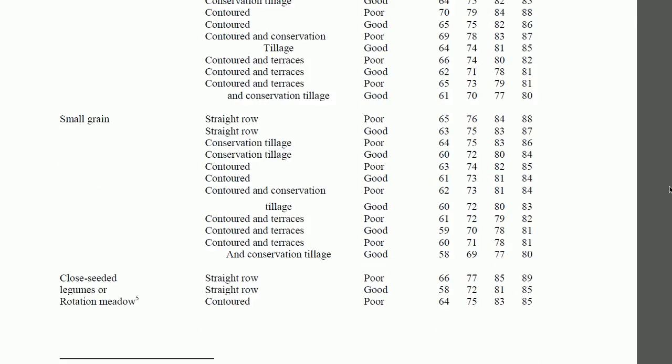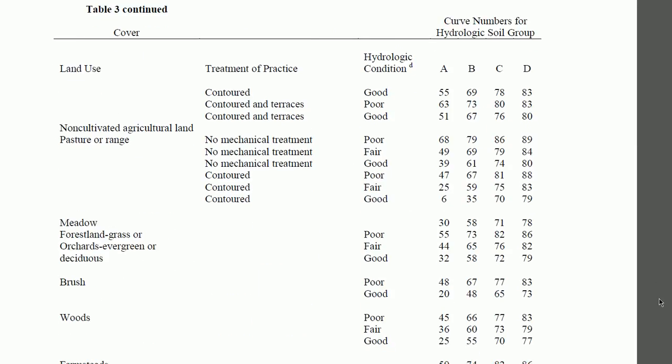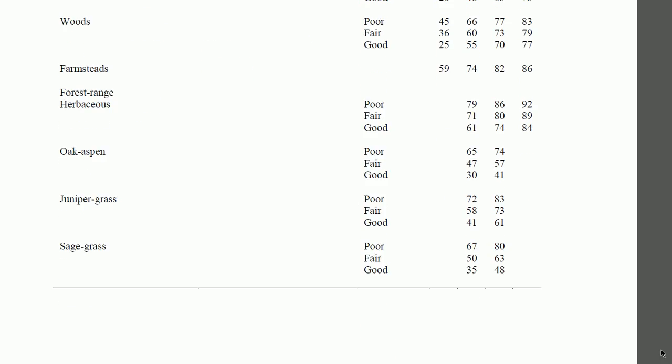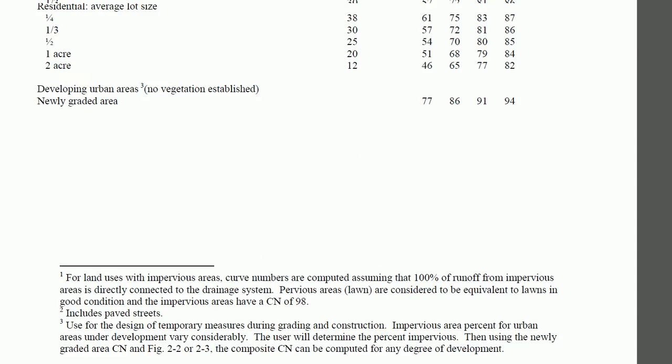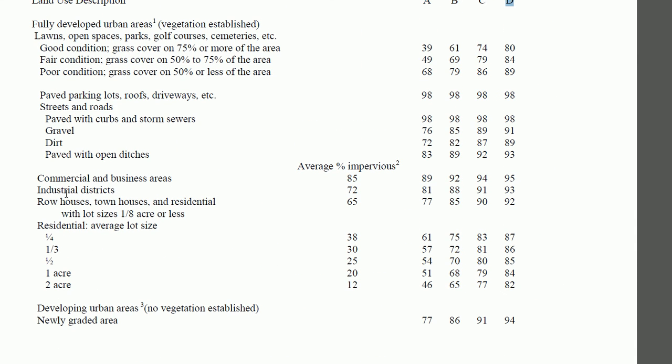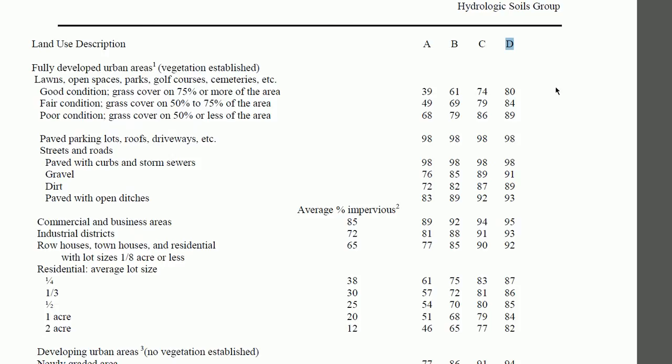So small grain, land use here, so meadows, woods, farm, all sorts of stuff. Up here you'll have residential areas, industrial districts, you'll have urban areas. There's our golf course that we were talking about, cemeteries. Yeah, cemeteries, so dead people absorb water too, I guess. But this is one of the charts you can use to figure out what the curve number is, okay?